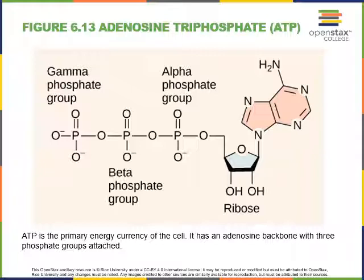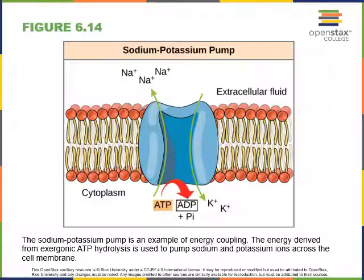As ATP is used, it will be broken down to release a phosphate group. We can see there are three phosphates in adenosine triphosphate. The sodium-potassium pump is an excellent example of a protein that uses the energy stored in ATP to perform cellular work.